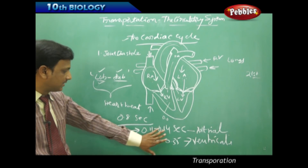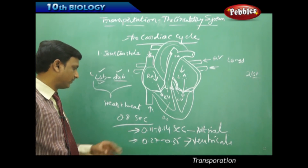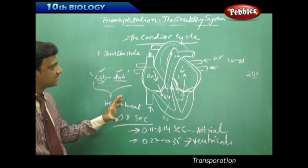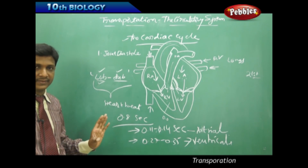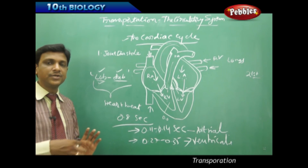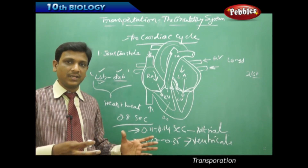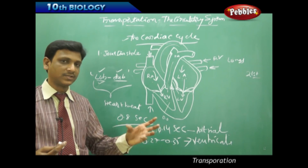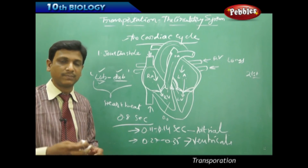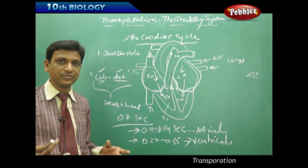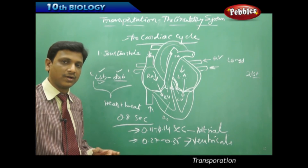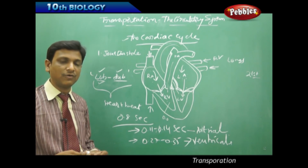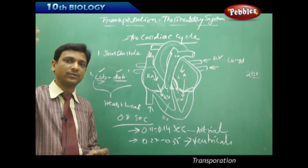This is the time required for the contraction of the atria and ventricles. From this we understand that blood is not continuously supplied. If you observe a water pipeline, a water motor pumps water continuously into the pipeline. In your house, water is drawn from the sump on the ground floor and pumped up into the tank, flowing continuously while the motor is on.